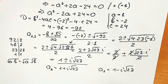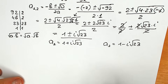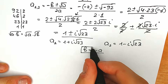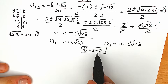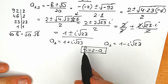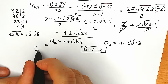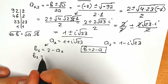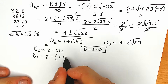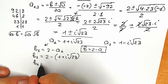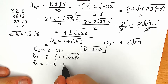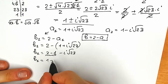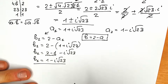Now don't forget about b, since our question asks for both a and b. Since b equals 2 minus a, let's find b₁ and b₂. So b₁ equals 2 minus a₁, which gives 2 minus (1 plus i√23), equal to 2 minus 1 minus i√23. Since 2 minus 1 equals 1, b₁ equals 1 minus i√23.